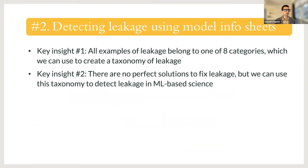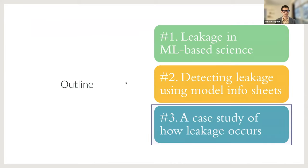This brings me to the end of the second part of the talk. The two key insights were: all types of leakage we found belong to one of just eight categories, forming a taxonomy; and while there are no perfect solutions for fixing leakage, we can use this taxonomy to detect leakage in ML-based science.